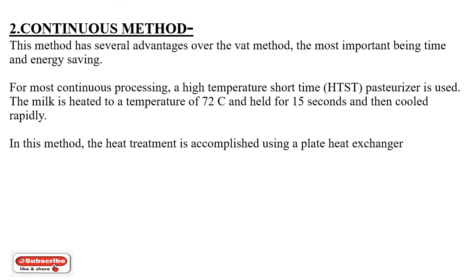The second is the continuous method. This method has several advantages over the batch method, the most important being time and energy saving. For most continuous processing, high temperature short time (HTST) pasteurization is used. The milk is heated to a temperature of 72 degrees Celsius and held for 15 seconds, and then cooled rapidly.